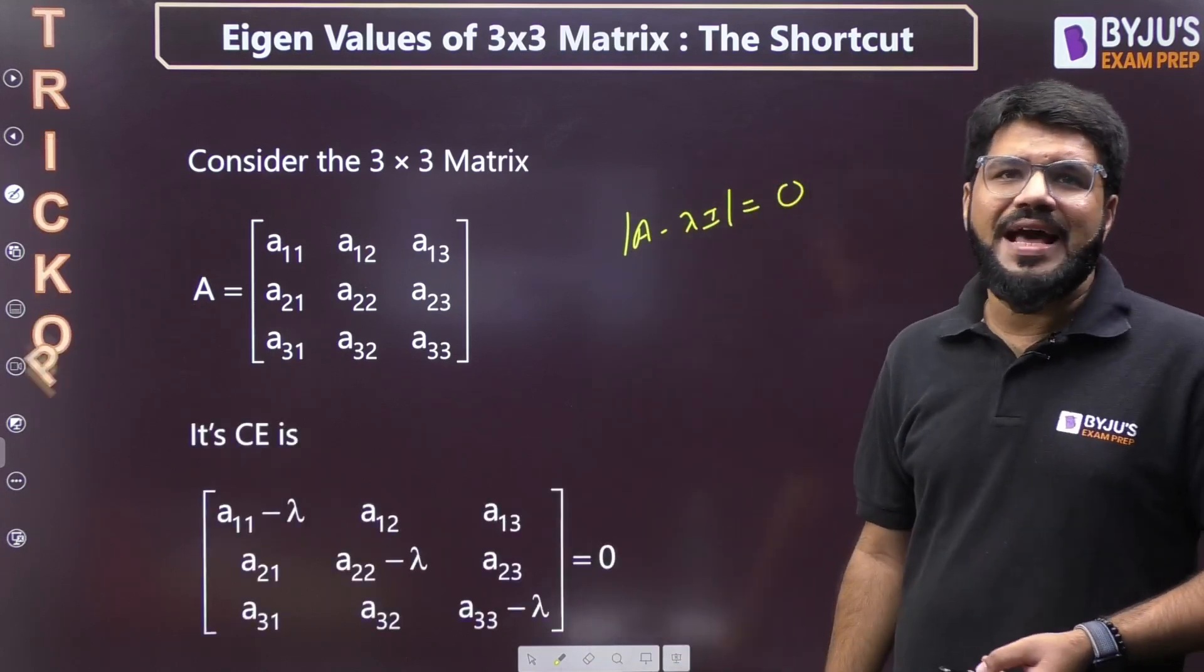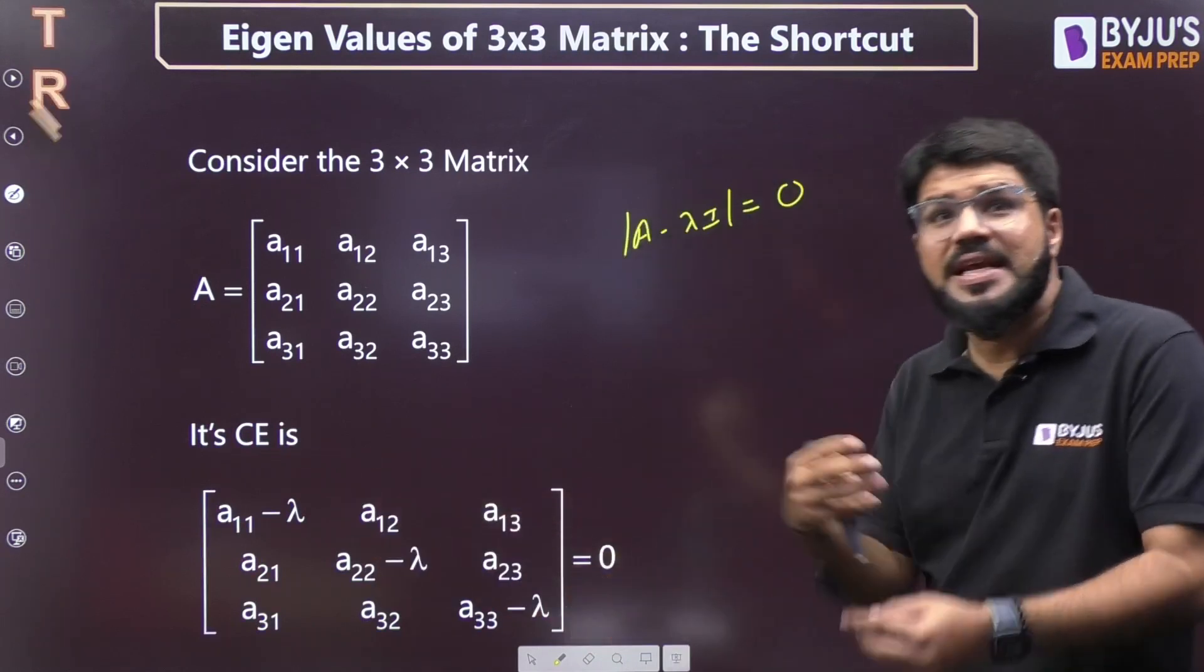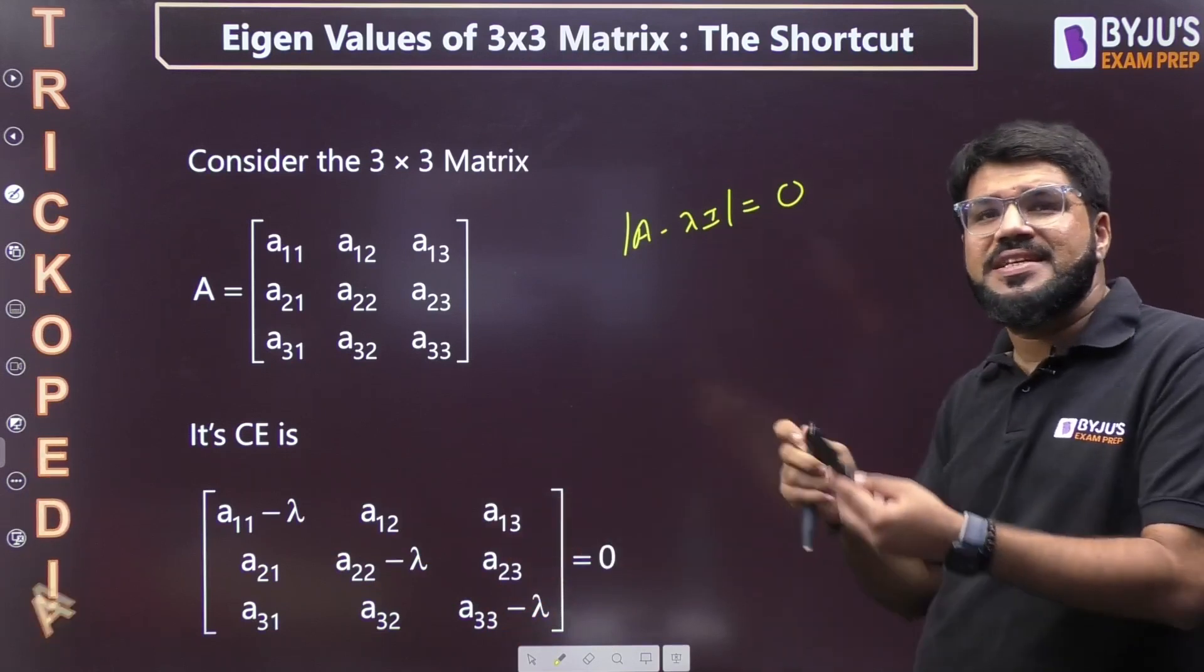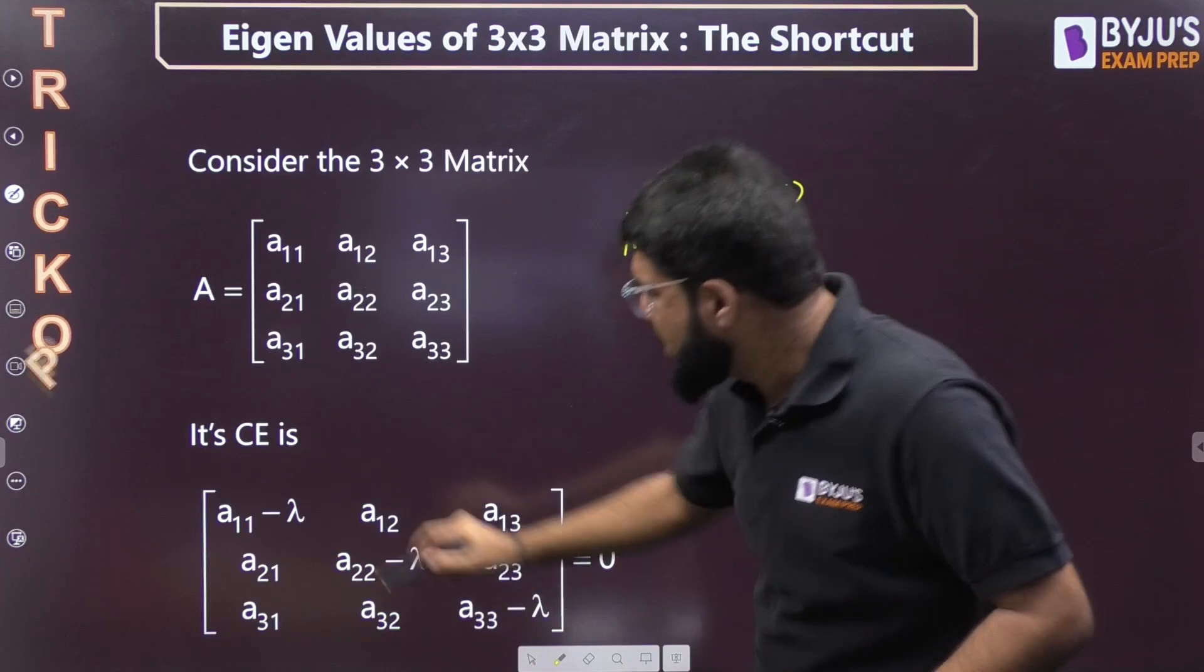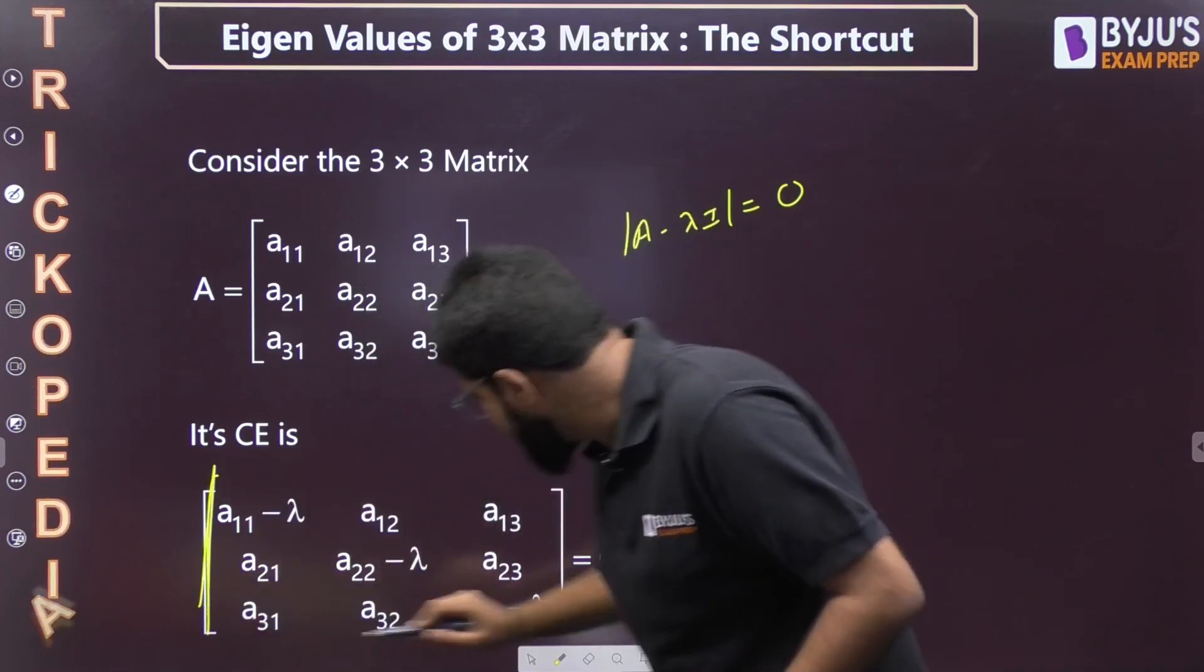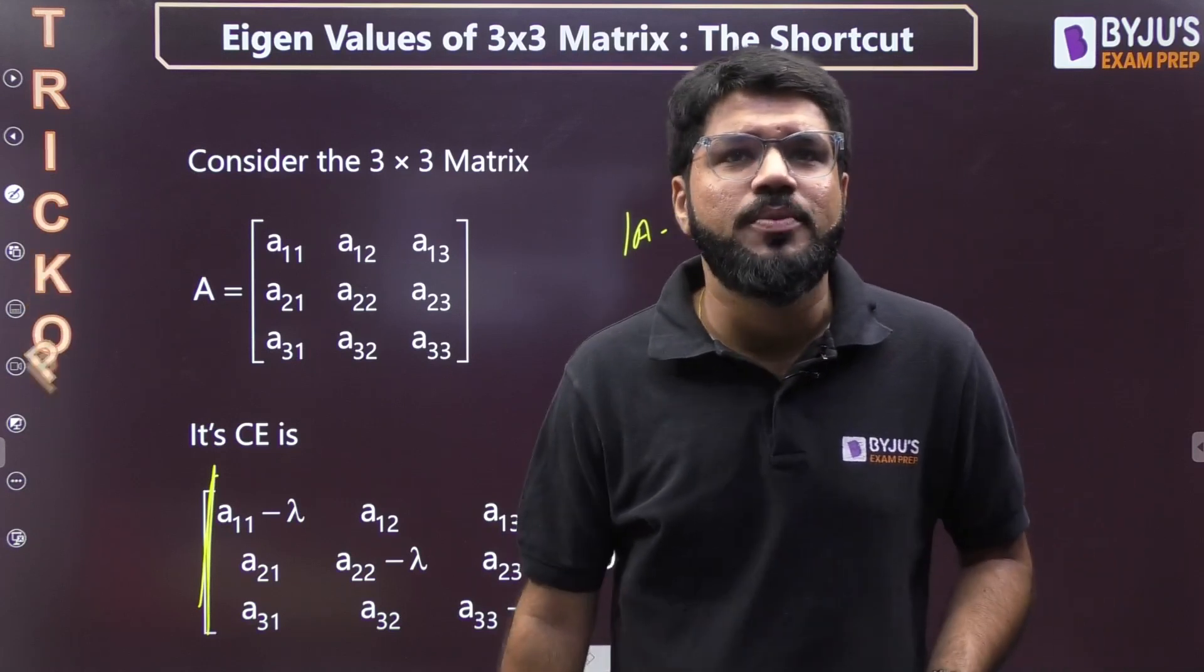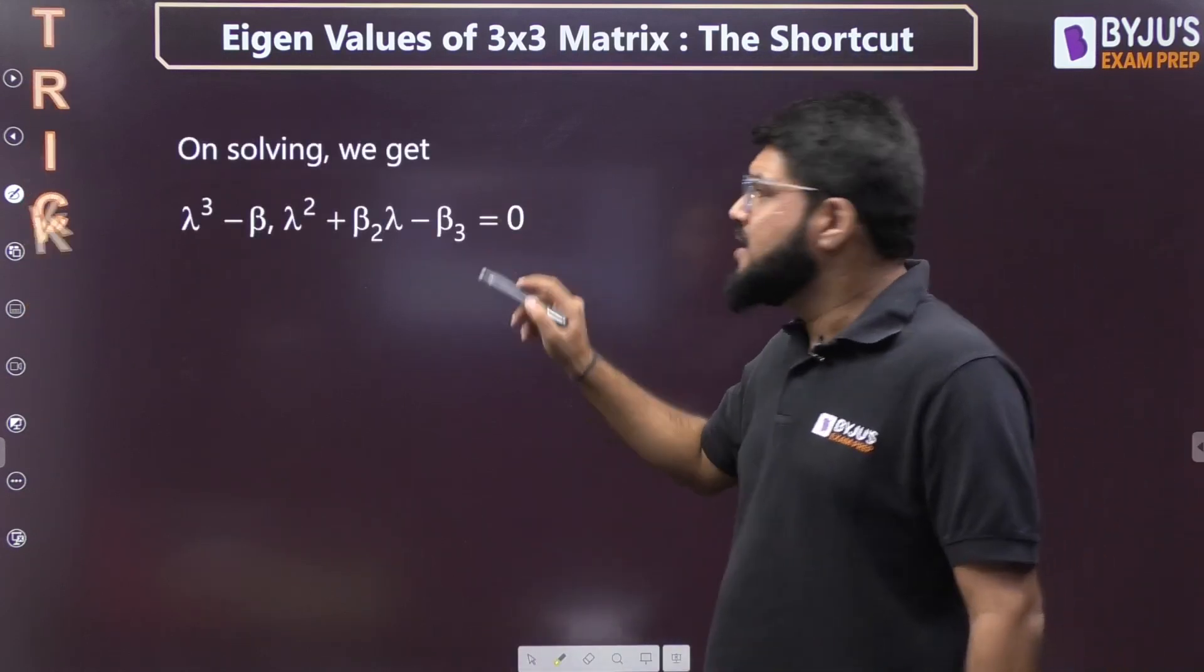If I have a 3x3 matrix with given elements, what is the characteristic equation? First, you compute |A - λI| = 0. Normally students will find the determinant, then find the equation and try to solve the roots every time.